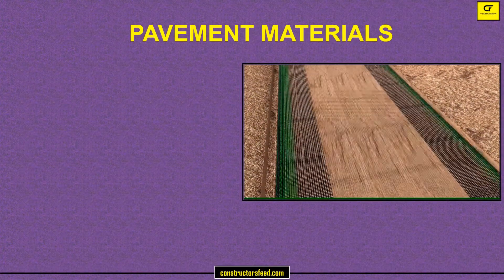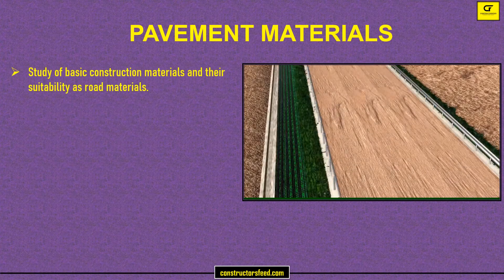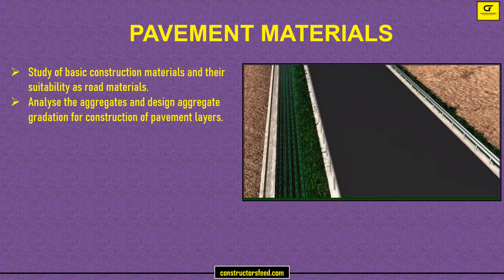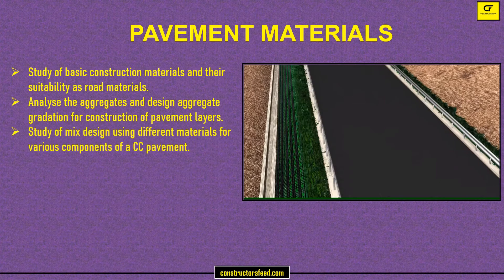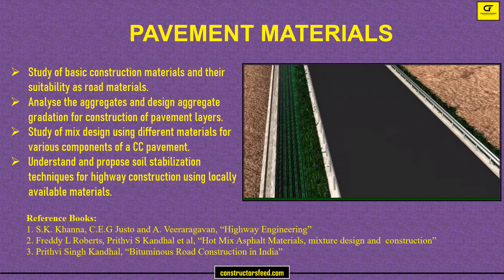Pavement Materials involves the study of basic construction materials and their suitability as road materials, analyzing aggregates and designing aggregate gradation for construction of pavement layers, study of mix design using different materials for various components of a CC pavement, and understanding and proposing soil stabilization techniques for highway construction using locally available materials.